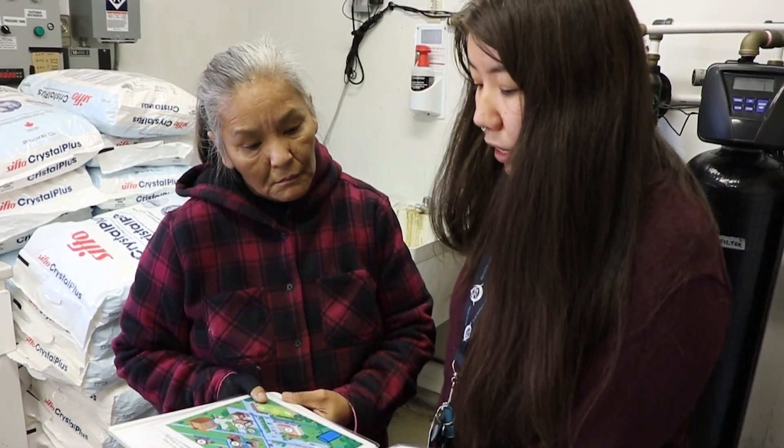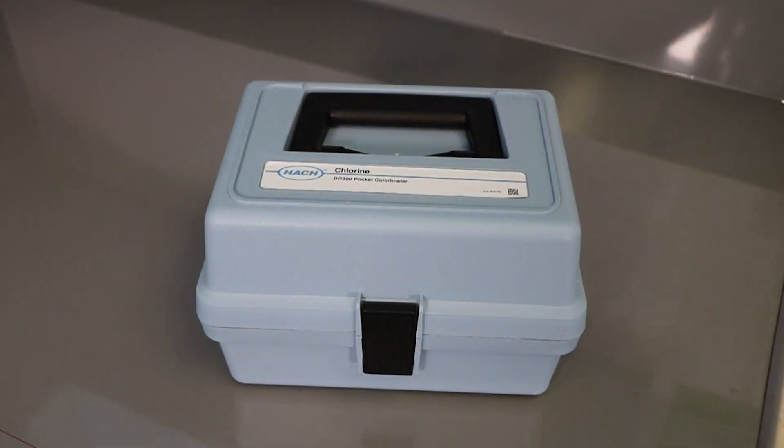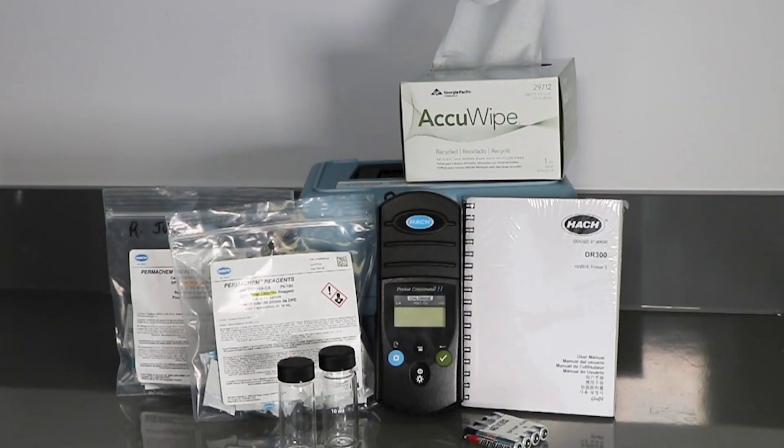Discuss with your environmental health officer where and how often chlorine residuals need to be sampled. The Hatch Pocket Chlorimeter 2 is a common chlorometer used by community-based water monitors. The chlorometer comes with an instruction manual which describes how to use it and how to troubleshoot problems.